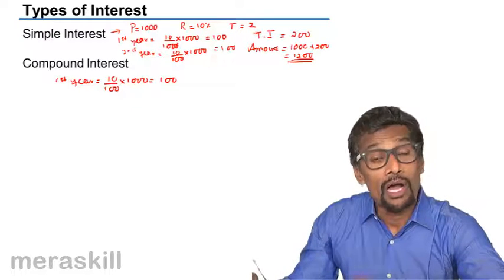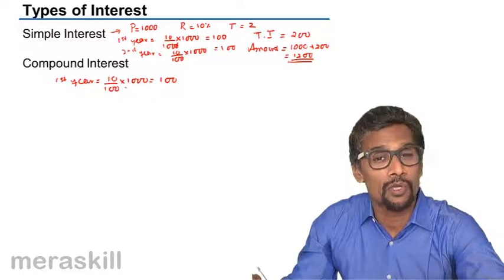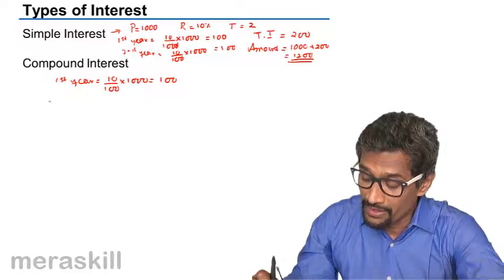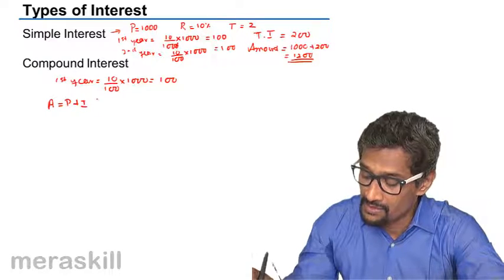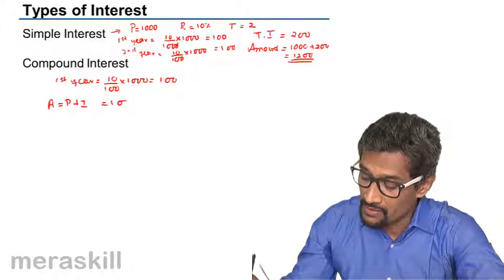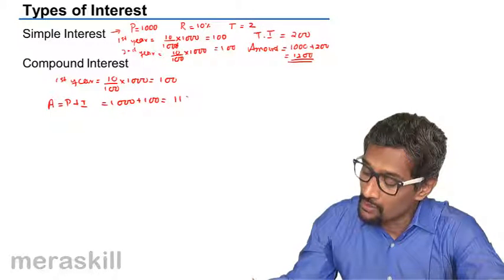Now unlike in simple interest where the second year's principle is also the same, here what we normally do is we take the amount as principle plus interest, which is 1000 plus 100, so you have 1100.